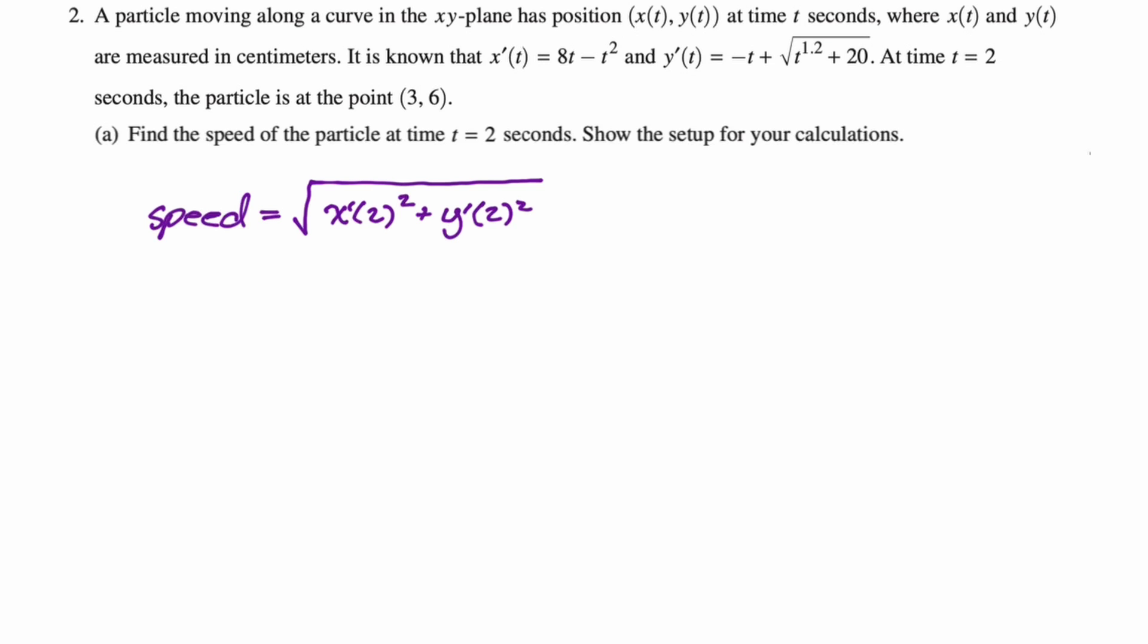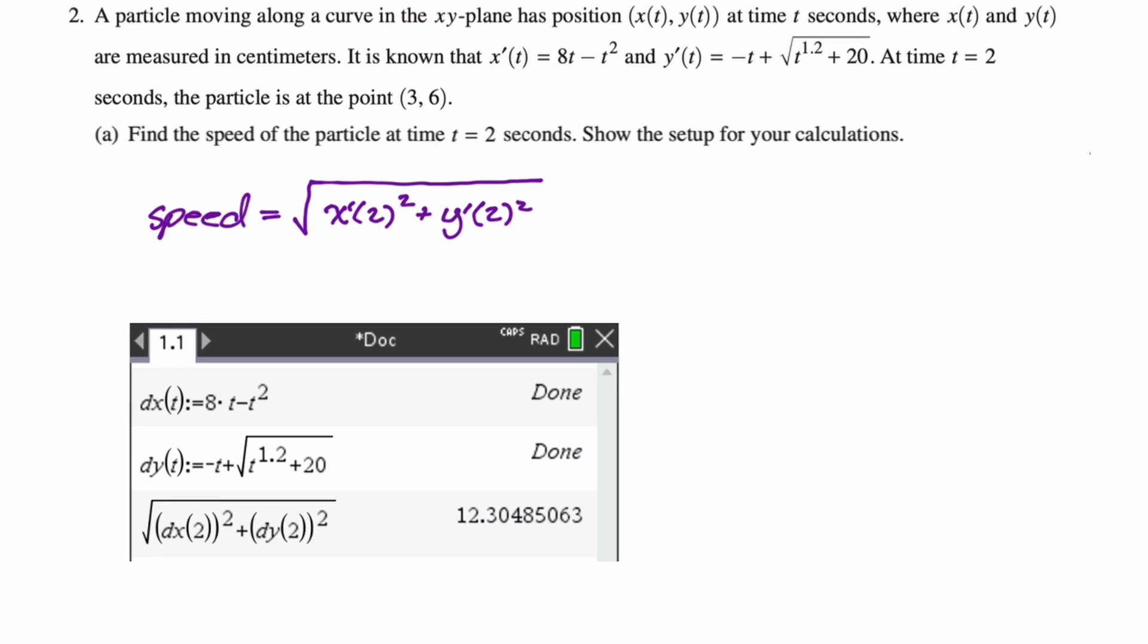So here we go. On the calculator, I just stored the functions and then after I stored the functions, I had it calculate this. So we'll say approximately 12.305. And again, if we needed units, it would be centimeters per second, but it doesn't ask for that.